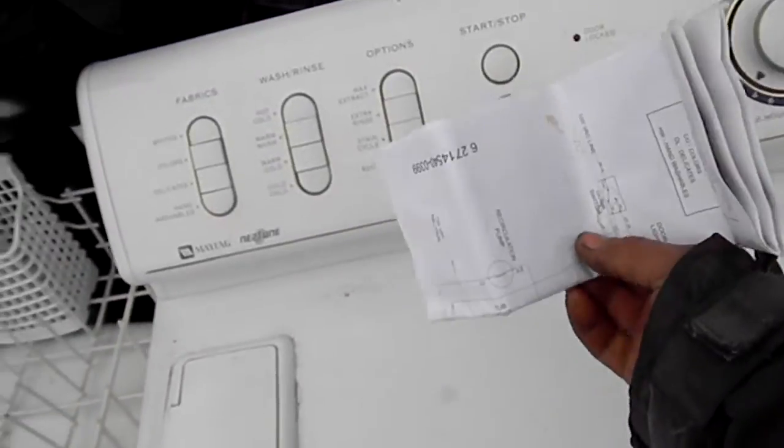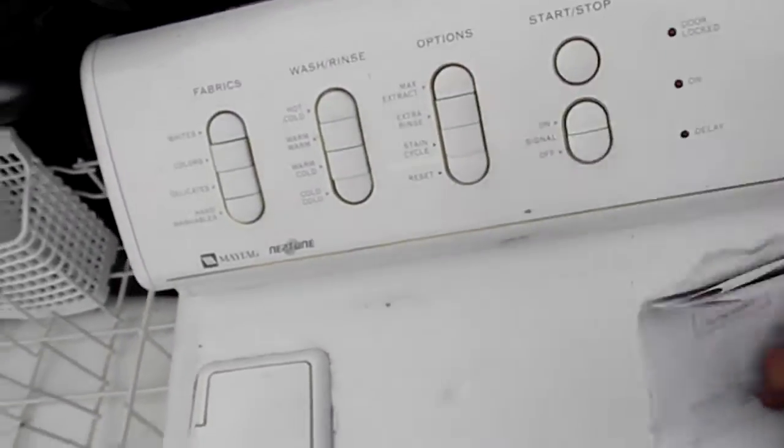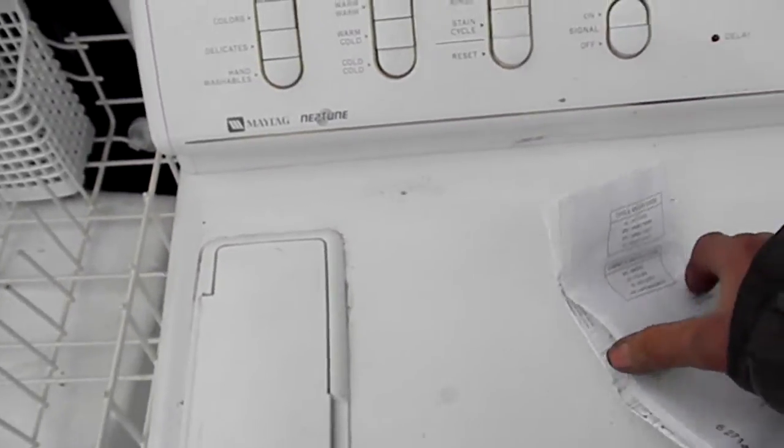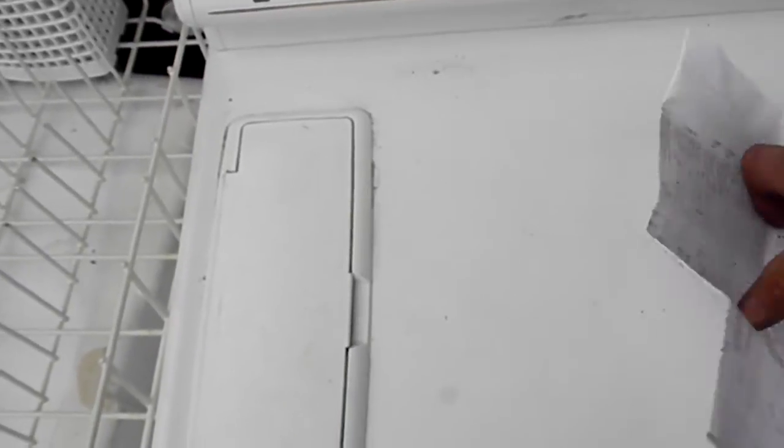The schematic is in the back of the top console - you'll have to pull that off. Hopefully you've got it with your machine and no one's taken it out. It'll tell you to check a couple of things on the speed control board.